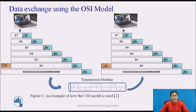At layer 2, i.e. data link layer, a trailer may also be attached. When the formatted data unit passes through the physical layer, i.e. layer 1, it is changed into an electromagnetic signal and transported along the physical link. Upon reaching its destination, the signal passes into layer 1 and is transformed back into digital form. The data units then move back up through the OSI layers. As each block of data reaches the next higher layer, the headers and trailers attached to it at the corresponding sending layer are removed and the actions appropriate to that layer are taken. Finally, the message arrives at the receiving process.